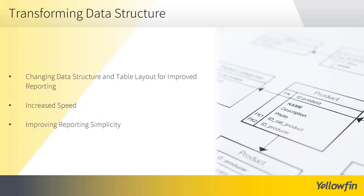And so what we're going to do in this example is we're going to try to change the data structure — we're going to change the table layout. And this may be for things like increasing the speed of your reporting, or even increasing the speed for another system, changing the format of the data so a different system could use it. It's also a key point for improving reporting simplicity. It could be that your data is in a shape that's difficult for your analysts to use, and by putting it in a more logical shape, they're going to be able to produce your reports faster.